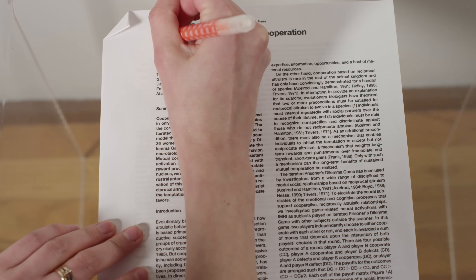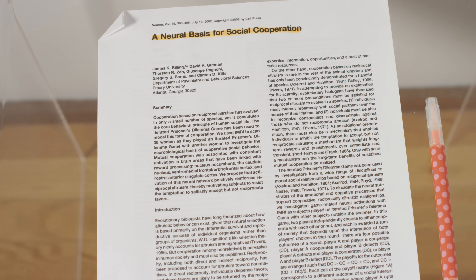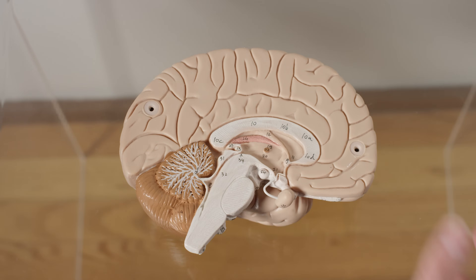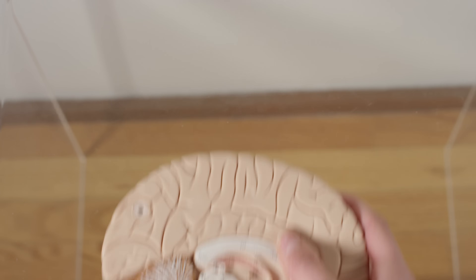But why? Why do we cooperate if the principle is sometimes counter-intuitive to our survival? Well, social cooperation is actually rewarding to our brains. In one study, participants did the prisoner's dilemma with an assumed human participant in an fMRI machine. When people cooperated in the dilemma, activation was seen in brain areas linked to reward processing. The researchers suggested this activation of the reward circuit may help to override that temptation people get to not cooperate.